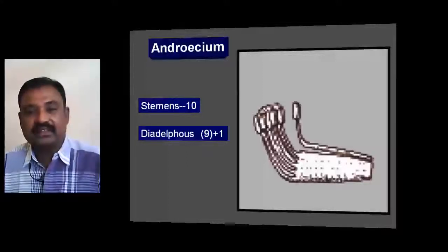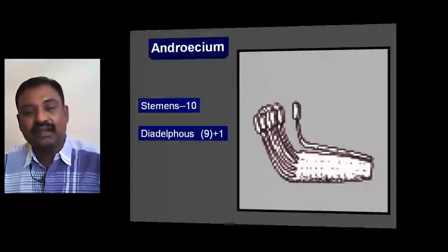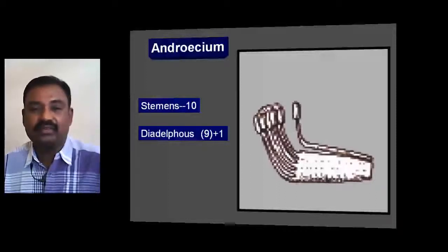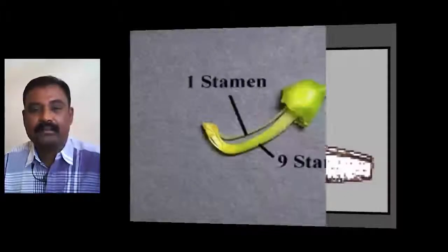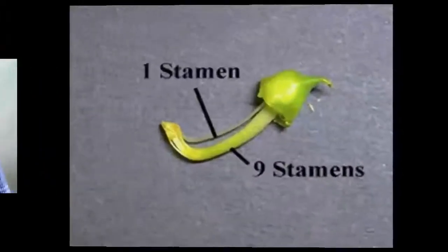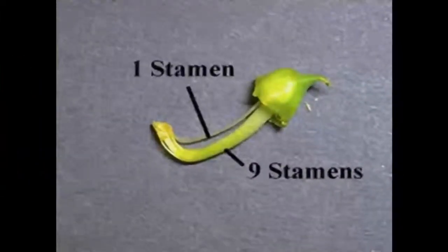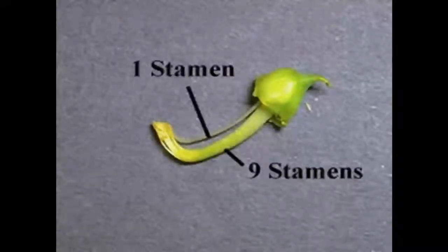This diadelphous condition is also a characteristic feature of Fabaceae. This diagram shows the diadelphous condition, in which the filaments of nine stamens are fused together into a single bundle and one stamen is separated as a single filament.